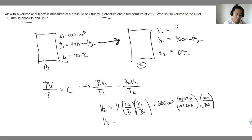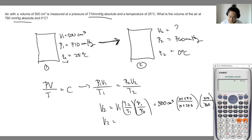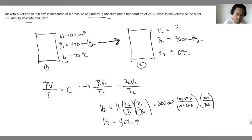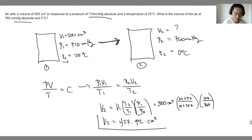V2 equals 500 cubic centimeters times (273/298) times (710/760). Computing that in the calculator gives 427.92 cubic centimeters. This is the final volume of the air after the process.